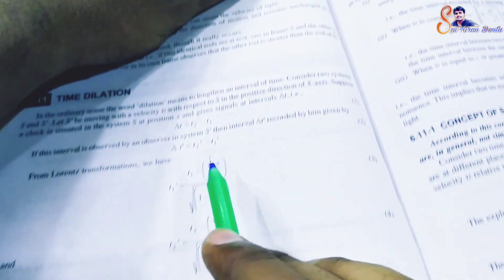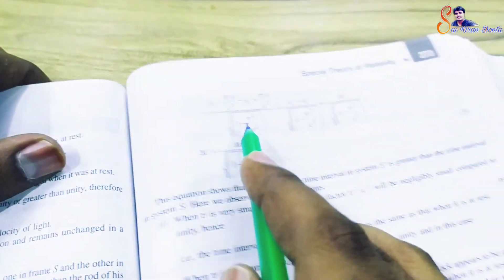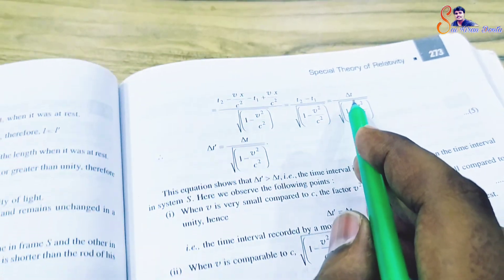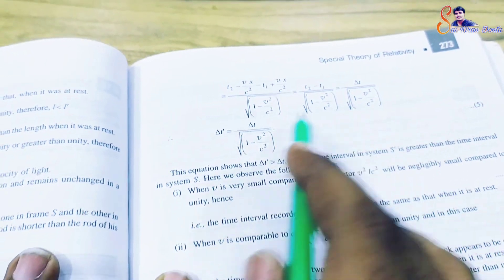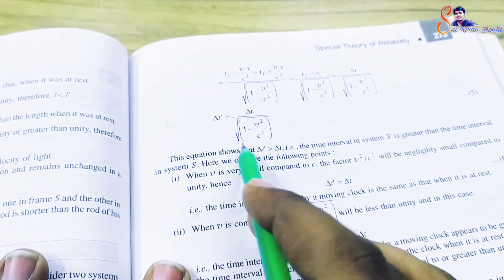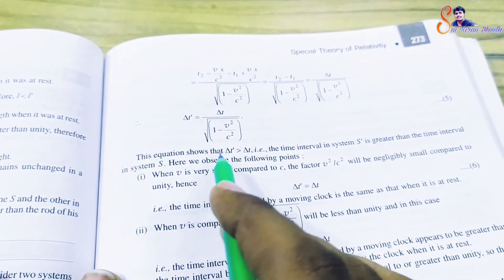Since t2 minus t1 equals delta t, we have delta t dash equals delta t divided by square root of 1 minus v squared by c squared.